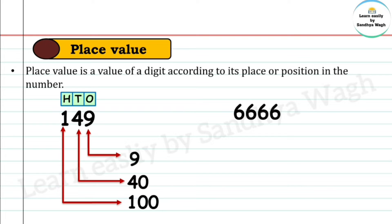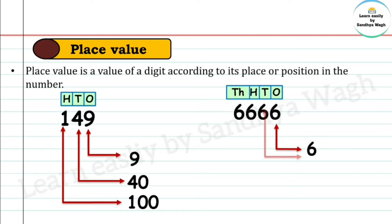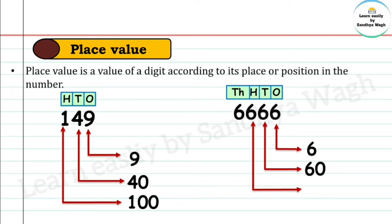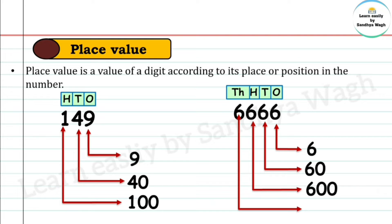Let's take one more example where we have the same digit in the ones, tens, hundreds, and thousands place. This 6 in the ones place has a place value of 6. This 6 in the tens place gives 60. This 6 in the hundreds place gives 600. And this 6 in the thousands place has a place value of 6,000.